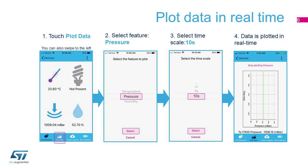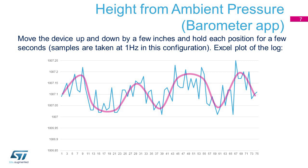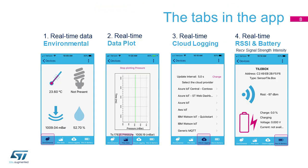First, select the feature to plot, and then select the time scale. Data is plotted in real-time. For example, ambient pressure can be seen changing in real-time if you move the SensorTile.Box up and down in the air by a few tens of centimeters. The app screen has some buttons at the bottom of the screen.